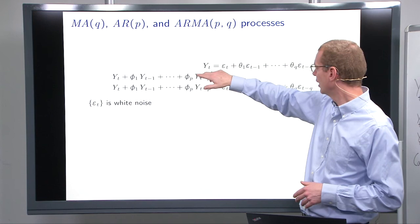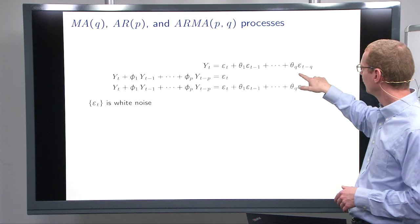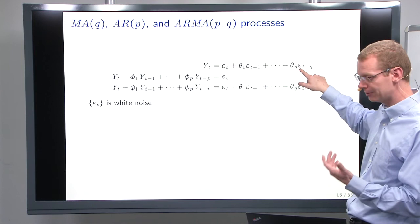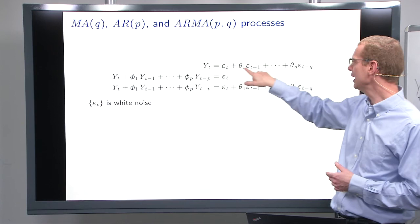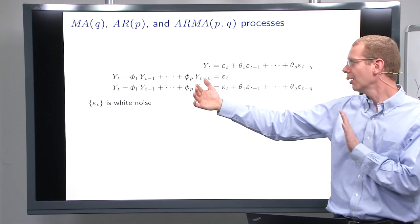We have a process where the outcome is the weighted sum of the previous q plus 1 residuals or epsilons. That's one kind of model. We call this a moving average model because what we effectively do is that we calculate a weighted average of the most recent epsilons.